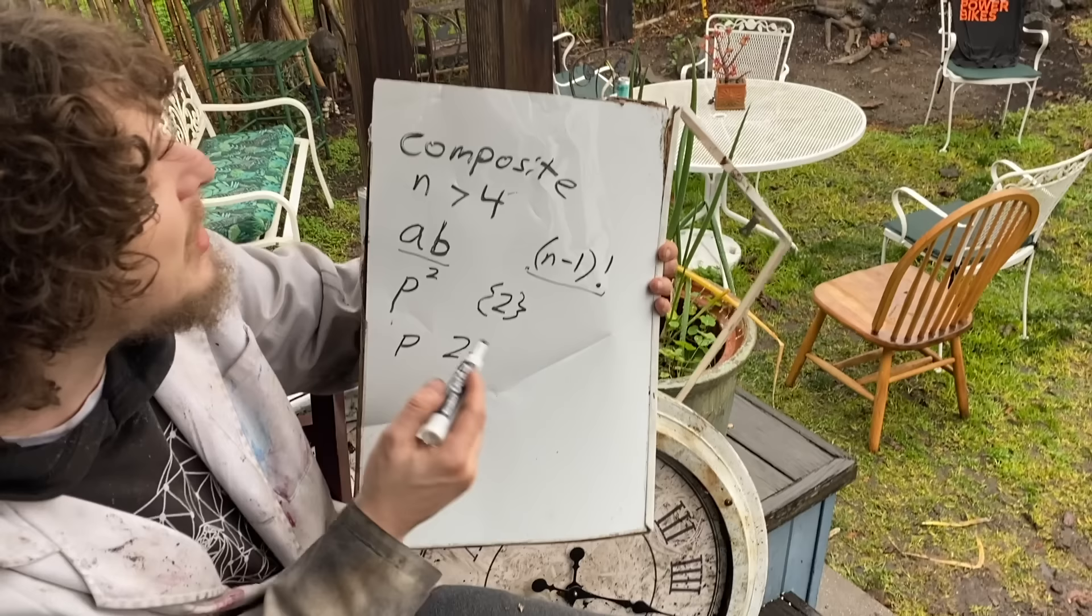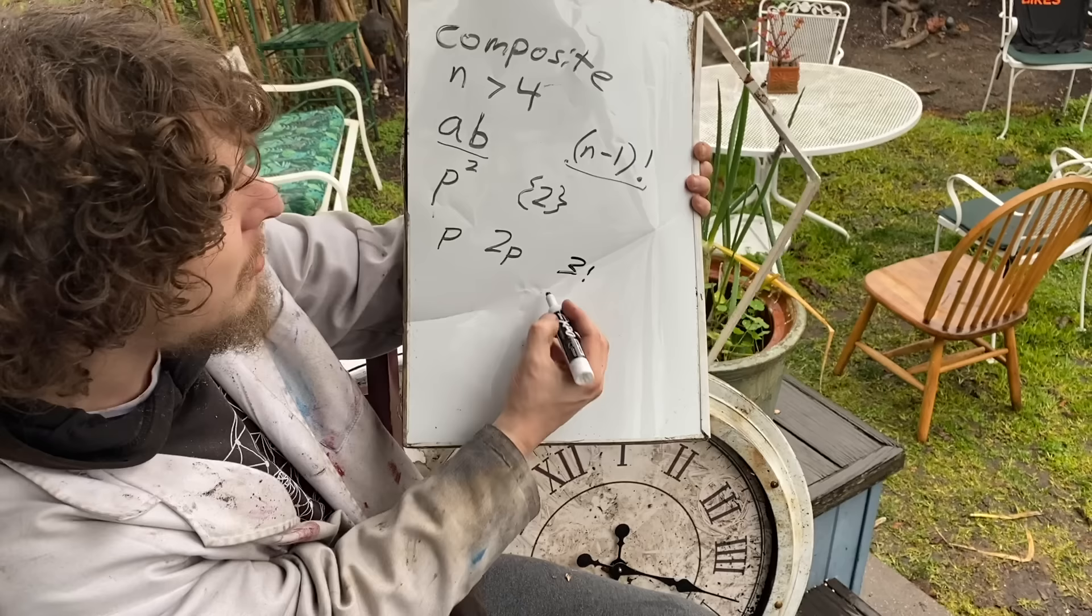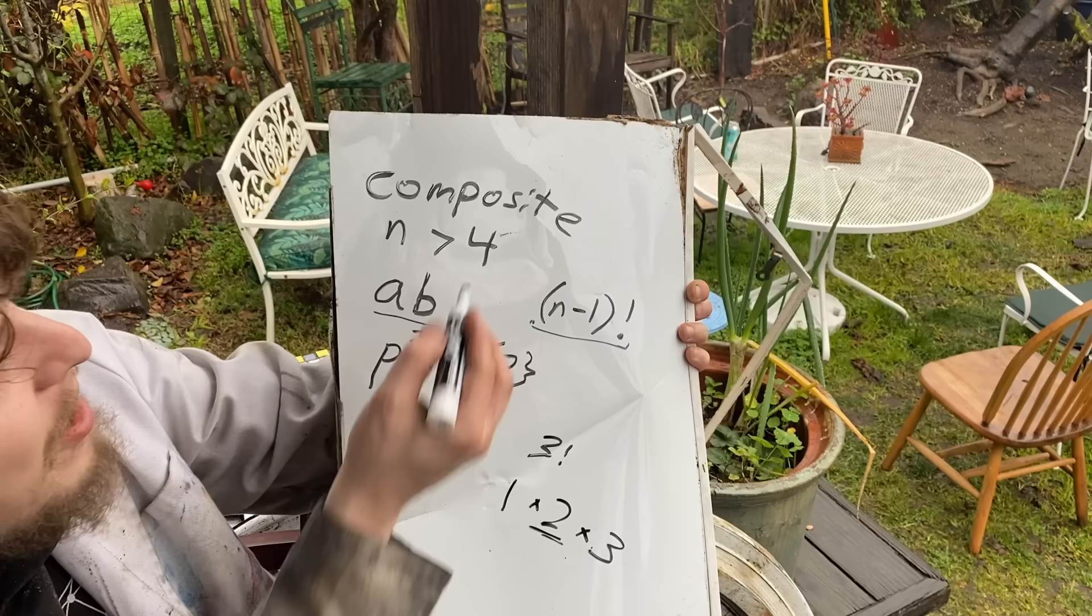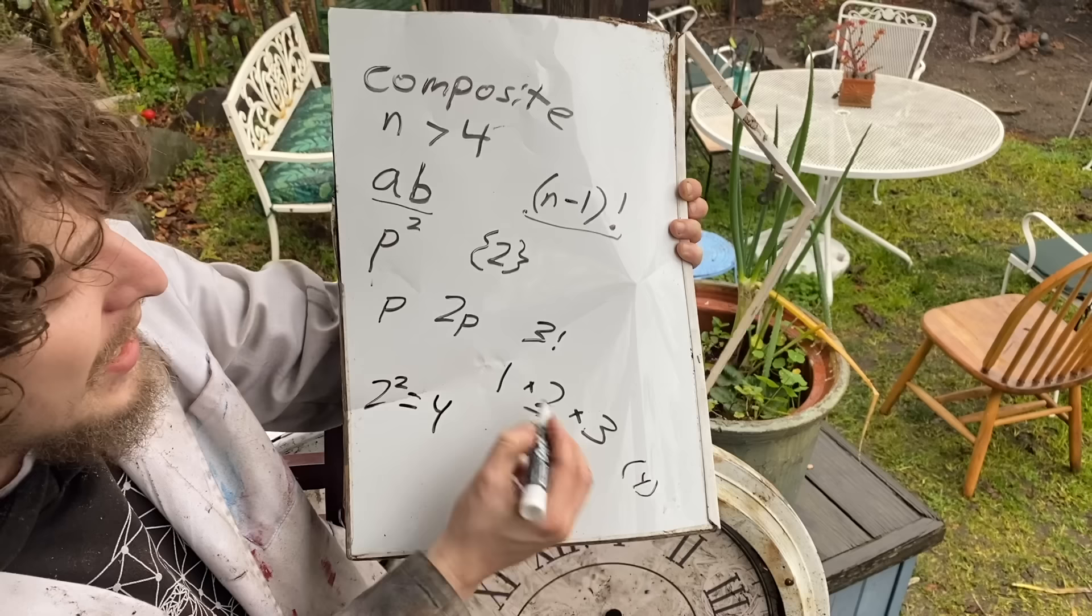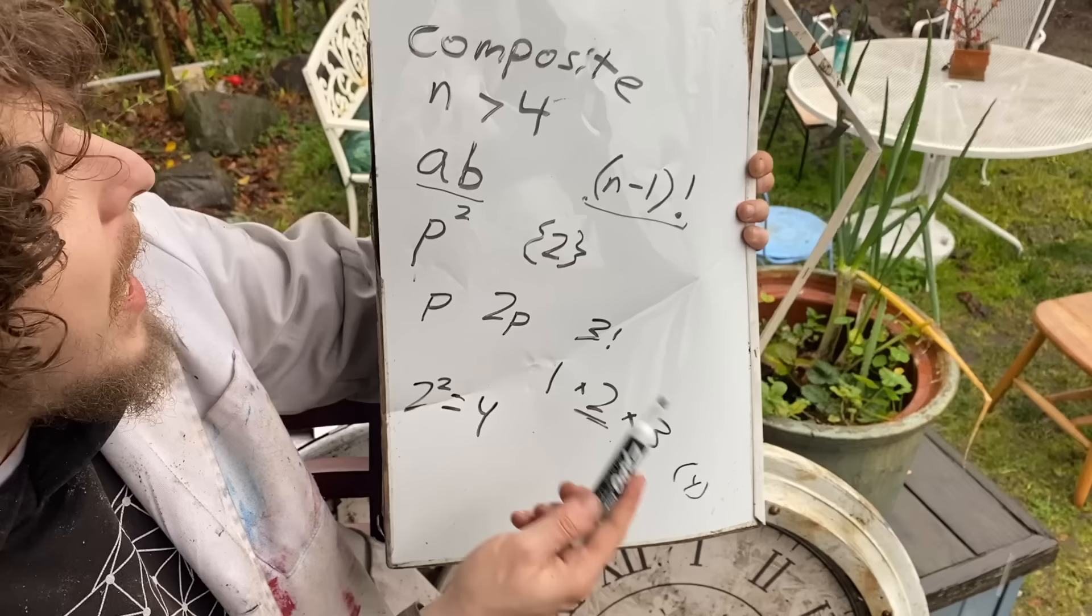So as long as n minus 1 factorial is big enough to contain p and 2p, or to contain this a times b of two different numbers, then it will be divisible, meaning that in that mod it'll be congruent to zero with no remainder. And 4 is the only small enough composite number that 3 factorial, the one one smaller than it, 1 times 2 times 3, does contain one of the primes that makes up 4 which is 2 squared, but doesn't contain that 2p.